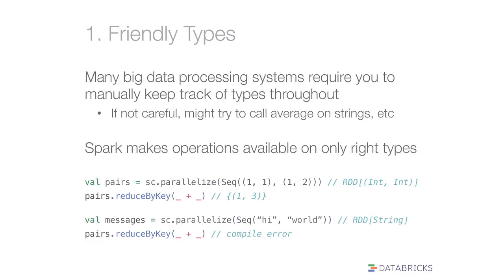Some are user-facing APIs, some are internal things, but they show what we've been able to do with it and what's let us move quickly. The first one is probably the simplest but important for users — having friendly types for things. If you look at big data processing systems out there, even some Scala-based ones are fairly loose about types. You kind of have to keep track of the schema of each row as you pass it through, and if you're not careful, you might try to average a column that's strings, or access a column that doesn't exist — and you won't discover that until runtime.